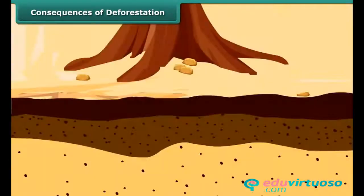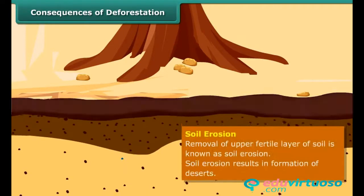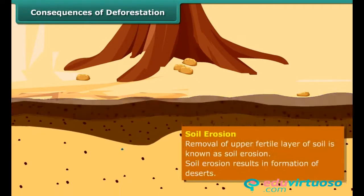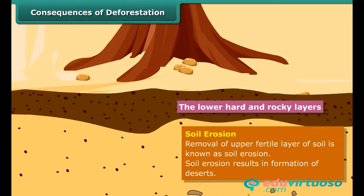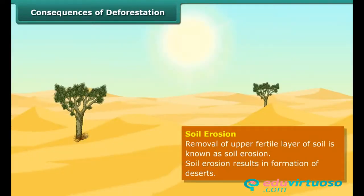Soil Erosion: Few trees result in more soil erosion. Removal of the top layers of the soil exposes the lower hard and rocky layers. This layer of soil has less humus and is less fertile. Gradually, the fertile land gets converted into deserts. This is called desertification.